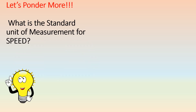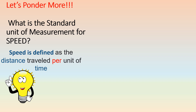Let's ponder more. What is the standard unit of measurement for speed? Let's check the definition of speed. Speed is defined as a distance traveled per unit of time. Therefore, it is written as: speed equals distance over time.